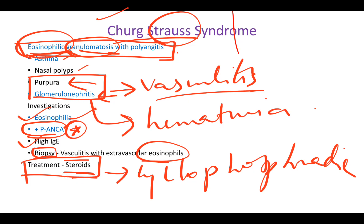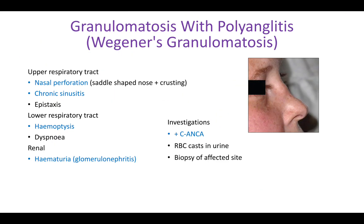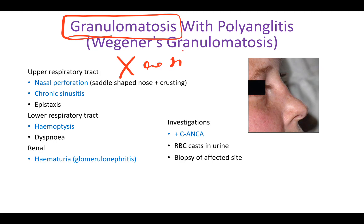This is Wegener's granulomatosis, also a necrotizing granulomatous disease without eosinophils — so there are no eosinophils here. Türkstra syndrome is called eosinophilic, but Wegener's is not called eosinophilic because it is not an allergy-associated vasculitis.